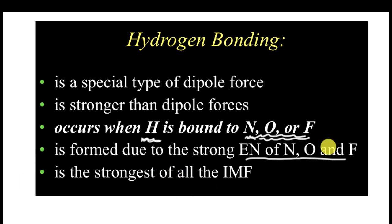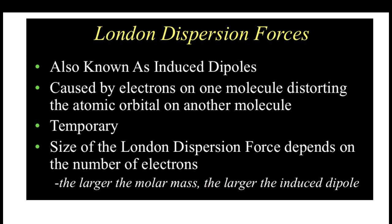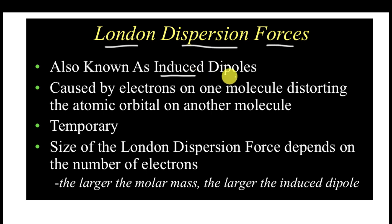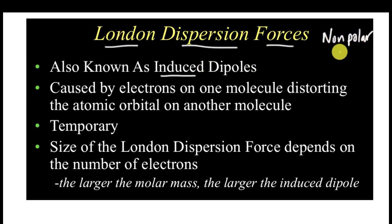If you have hydrogen bonded to any of those three elements, you get hydrogen bonding. These elements have such high electronegativity differences compared to hydrogen that it creates a super strong attraction force between the two molecules. It's formed due to the difference in electronegativity of nitrogen, oxygen, and fluorine, and this tends to be the strongest of all the intermolecular forces. Now let's look at London dispersion forces — the last one, and the one that's a little bit difficult, because this is an induced dipole, unlike the permanent dipole we talked about before.